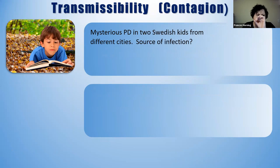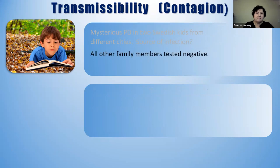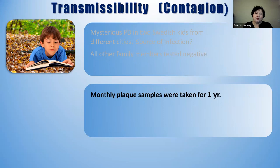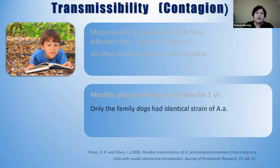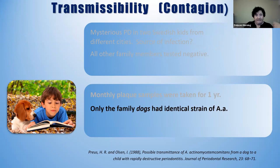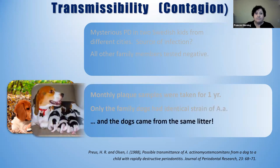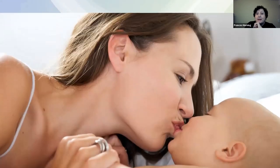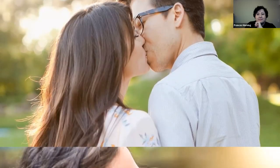A study done in Sweden looked at two different children from two different families who both had periodontal disease with no family history of it. Monthly plaque samples were taken over a year at 3, 6, 9, and 12 months. It turned out both children had dogs — and the dogs came from the same litter. The dogs had the same strain of Eikenella corrodens. So they got infected not from their parents but from their animals. Basically, you get these pathogens from mothers, lovers, and pets.